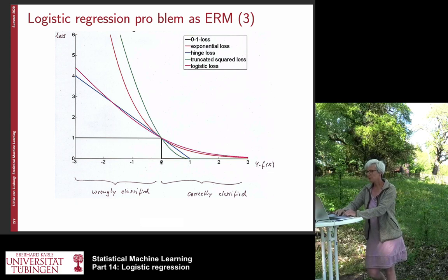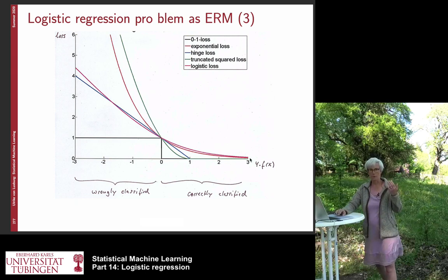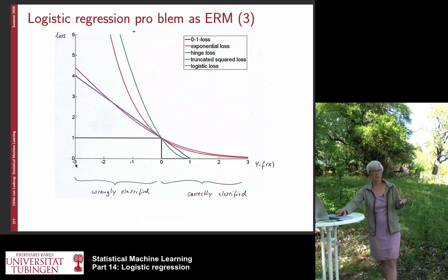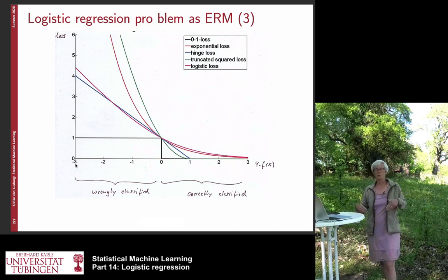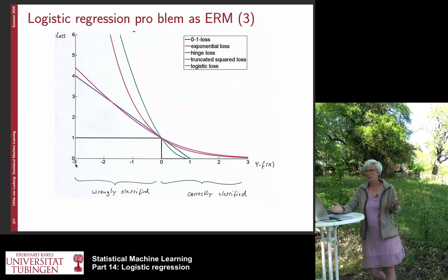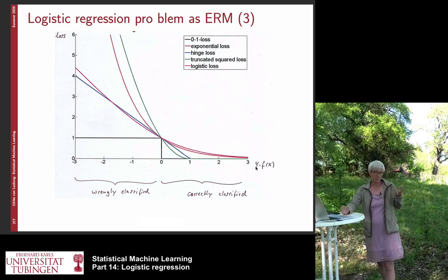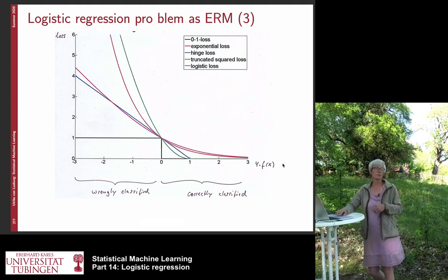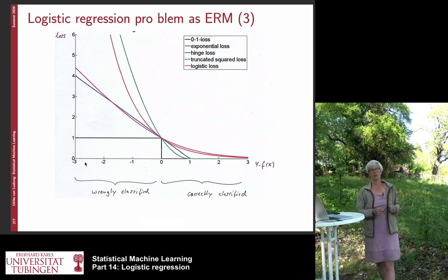Zero is here in this plot. Everything that is on the right-hand side of zero are points where I made a correct decision. And everything that is on the left side is where I make a wrong decision. And now I can try to plot a loss function and show how much do I punish a certain function if it makes a certain decision. And this might depend on the function value f(x). Because y always has the absolute value one, so it is plus one or minus one. So going to the right-hand side of this plot means that f(x) increases. And going to the left-hand means that also the absolute value to the negative side of f(x) increases.